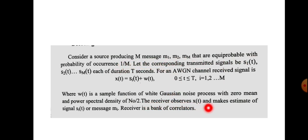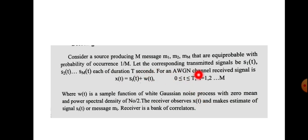The receiver observes X(t) and makes an estimate of the transmitted signal Si(t), or equivalently the message Mi. The receiver makes a decision about which signal was sent — S1(t), S2(t), or Sm(t) — based on the received X(t). This is the decoding problem we are discussing.